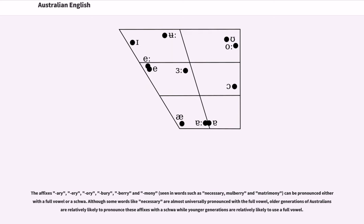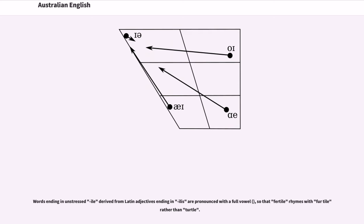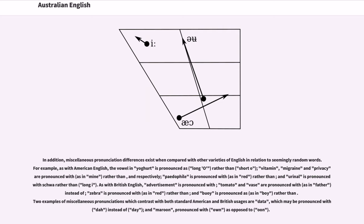Words ending in unstressed -ile derived from Latin adjectives ending in -ilis are pronounced with a full vowel, so that fertile rhymes with fertile. In addition, miscellaneous pronunciation differences exist when compared with other varieties of English in relation to seemingly random words. For example, as with American English, the vowel in yogurt is pronounced as long O, rather than short O. Vitamin, migraine and privacy are pronounced with /aɪ/ as in mine, rather than /ɪ/ respectively. Pedophile is pronounced with /ɛ/ as in red, rather than /iː/, and urinal is pronounced with schwa rather than long I.